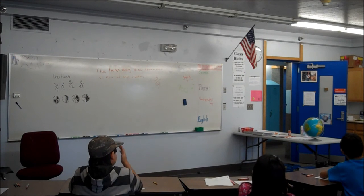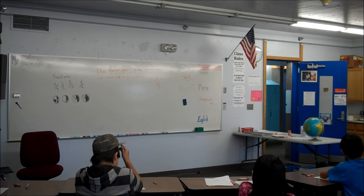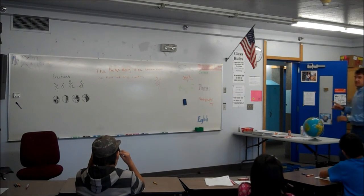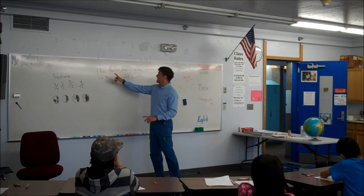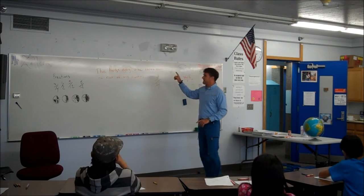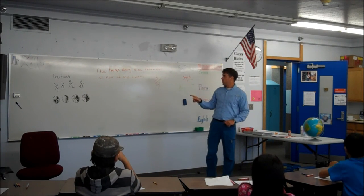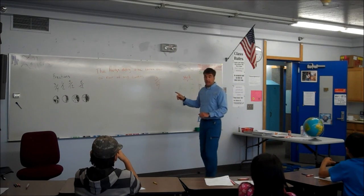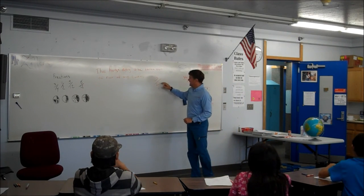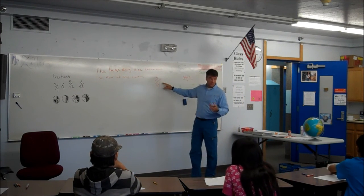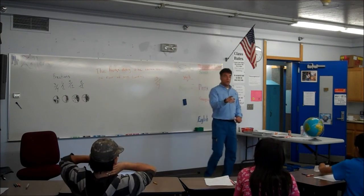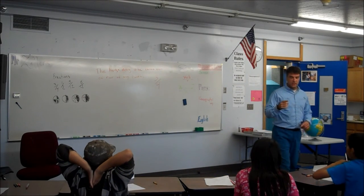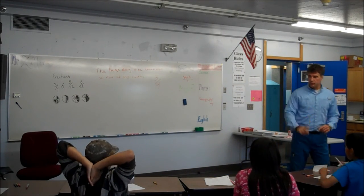All right, so what we're going to do now — we just did this example, the first example for dictation. The huge dog ate three out of four of my candies, and Grace told us the fraction was three-fourths. So now you have your red, green, and blue crayons.